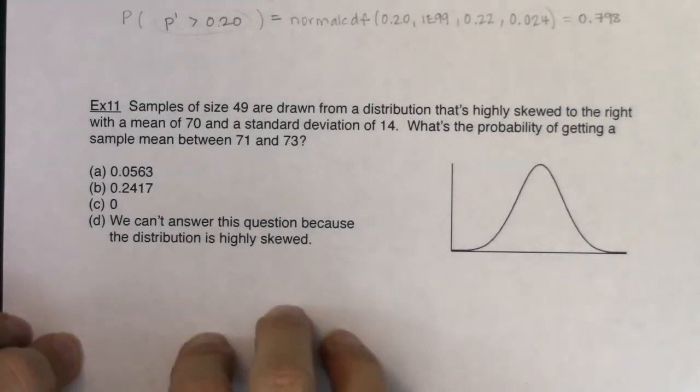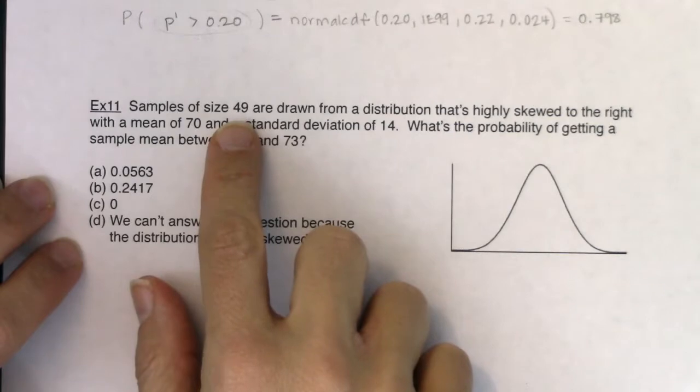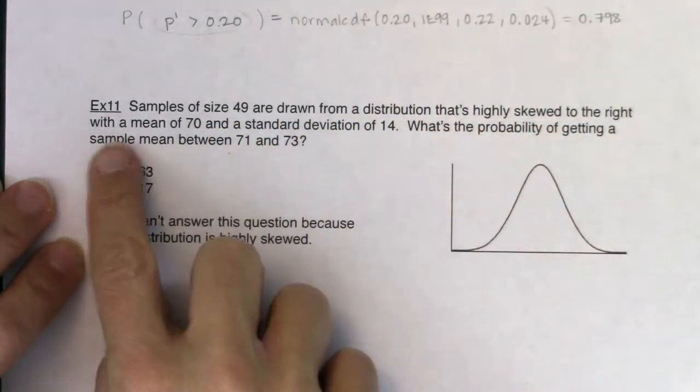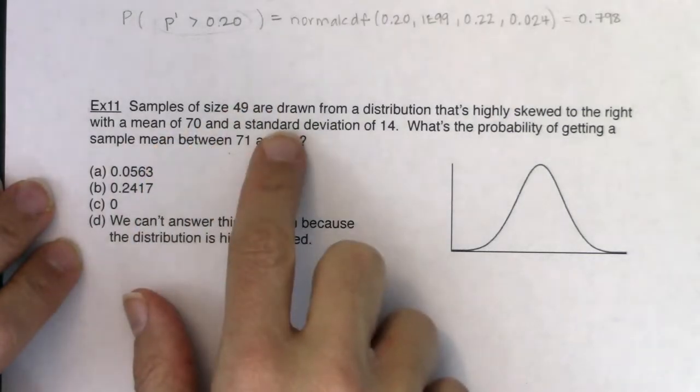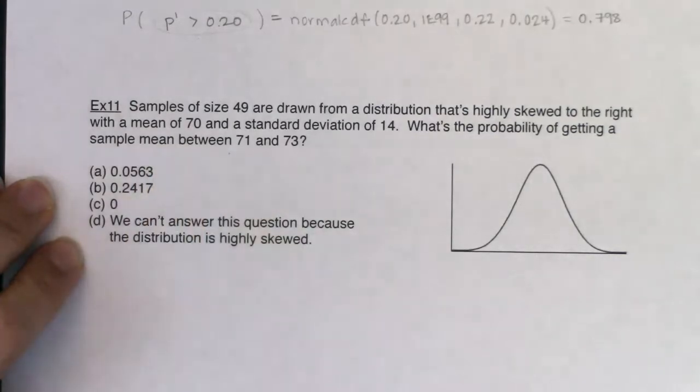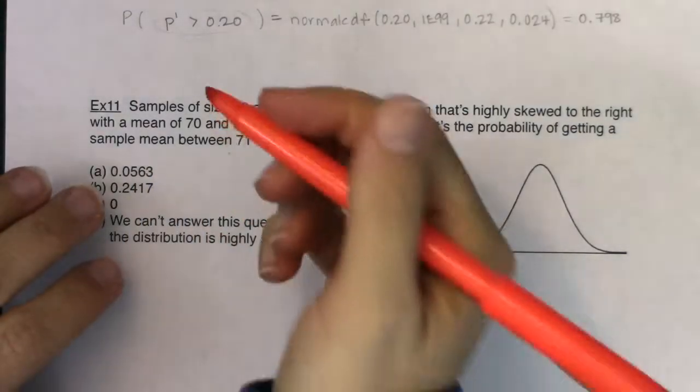Let's look at example 11 and the first thing I want to think about is which land am I in. I'm going to be on a sampling distribution, but am I looking at averages or am I looking at proportions? So let's be on the lookout for buzzwords to help us through this. Samples of size 49 are drawn from a distribution that is highly skewed to the right with a mean of 70 and a standard deviation of 14. What's the probability of getting a sample mean between 71 and 73?